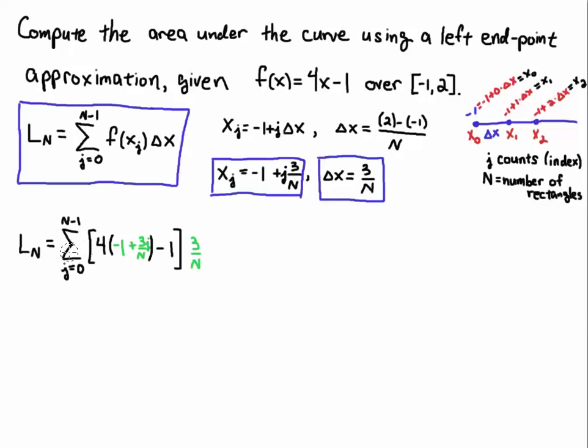Now the summation symbol, this is just going to come along for the ride. I'll take the x sub j, and I'll substitute it into the function. The function is 4x minus 1. So I'll take the x sub j, and I'll substitute that into the 4 times the point x sub j, which is given by this formula, minus 1. I'll multiply that quantity by delta x. So this is f of x here, and this is delta x here.